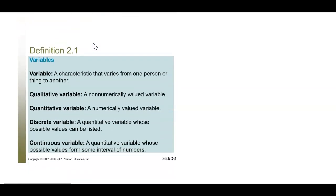First we have a variable. A variable is any characteristic that varies from one person to another. This is what we are going to be measuring throughout the whole semester in statistics. There are two main types of variables: qualitative and quantitative.